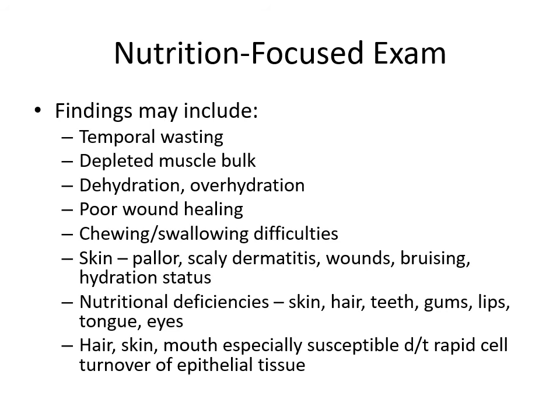Findings we search for include temporal wasting (loss of fat mass at the temples), depleted muscle bulk, dehydration or over-hydration, poor wound healing, chewing or swallowing difficulties, and lack of dentition. For skin, we look for pallor, scaly dermatitis, wounds, bruising, or tenting to determine hydration status. Nutritional deficiencies can be detected in the skin, hair, teeth, gums, lips, tongue, and eyes — these areas are especially susceptible due to rapid cell turnover.